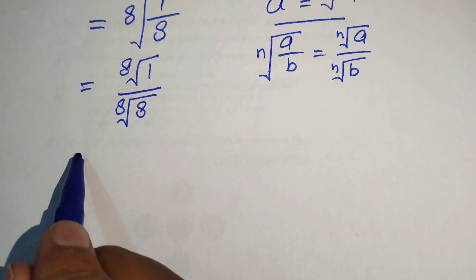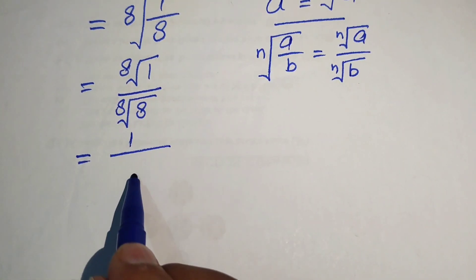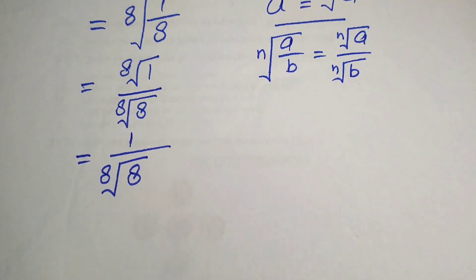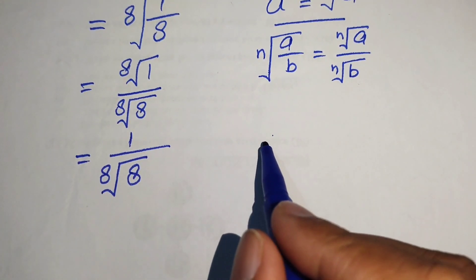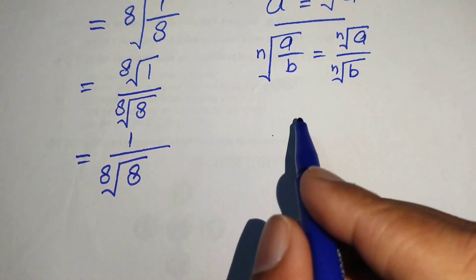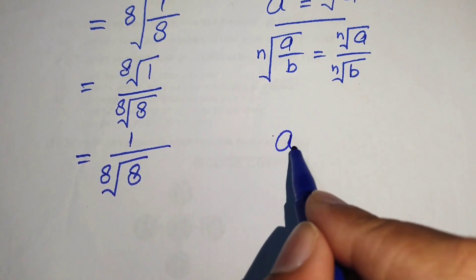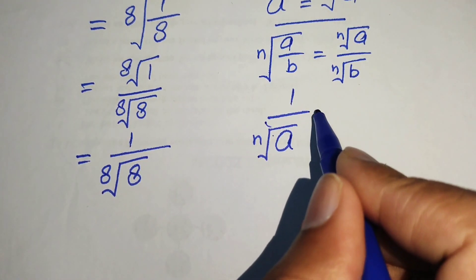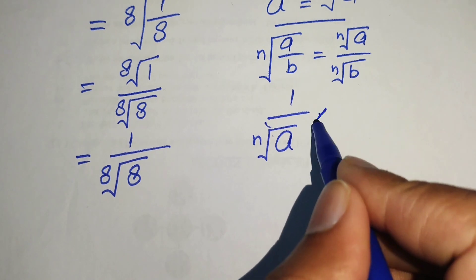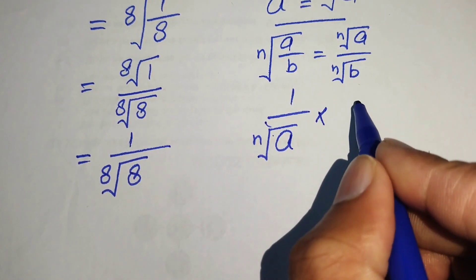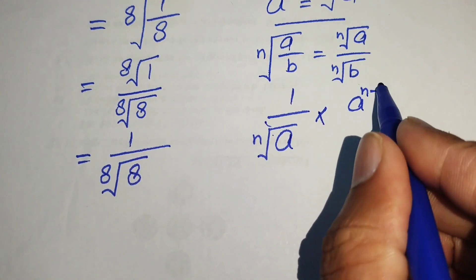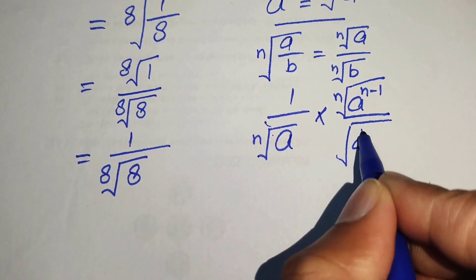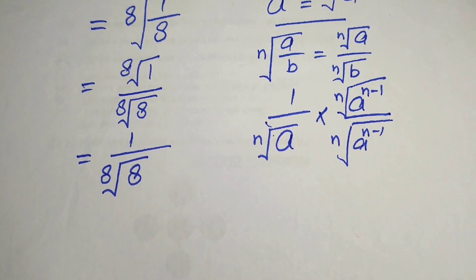We know that the nth root of 1 equals 1, so we have 1 divided by the 8th root of 8. Then we use another radical formula: if we have 1 over the nth root of a, we multiply the expression by the nth root of a to the power of n minus 1, divided by the nth root of a to the power of n minus 1.